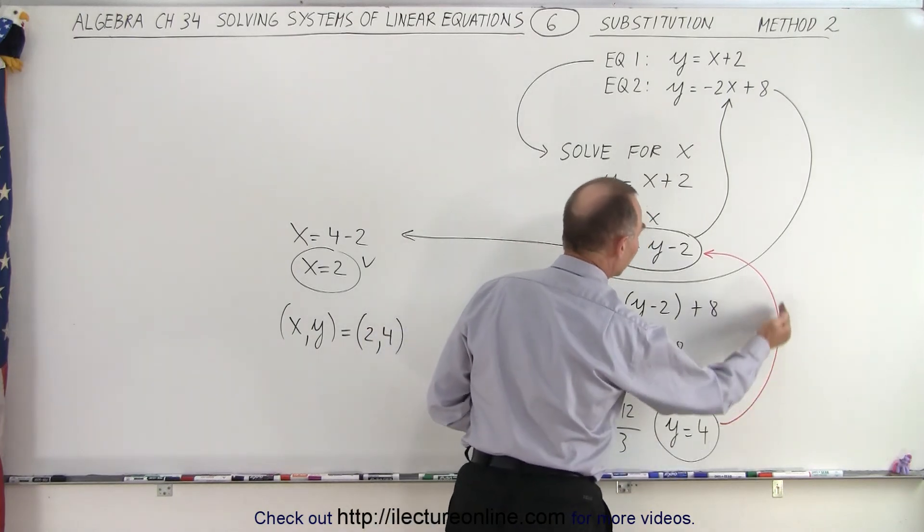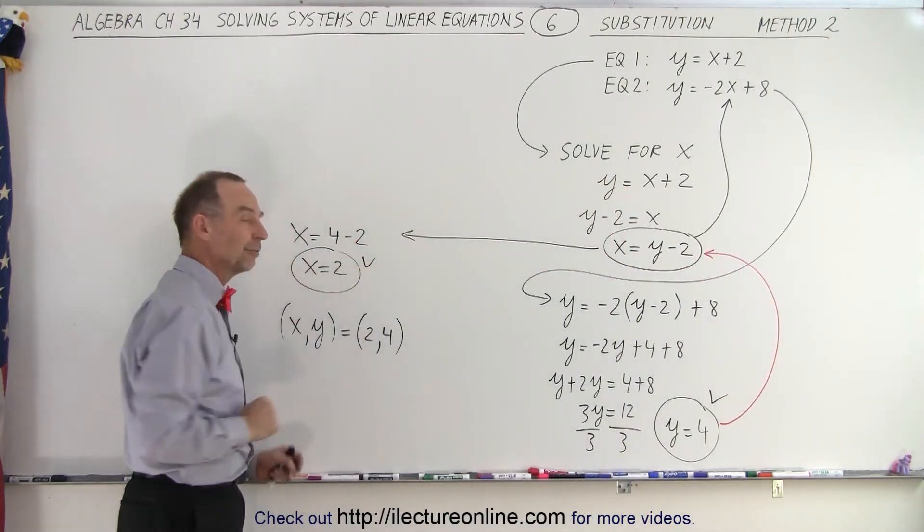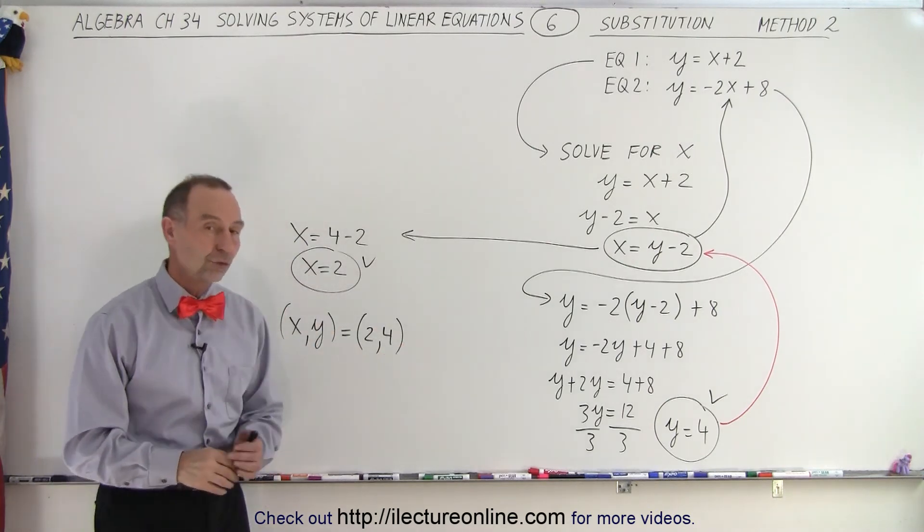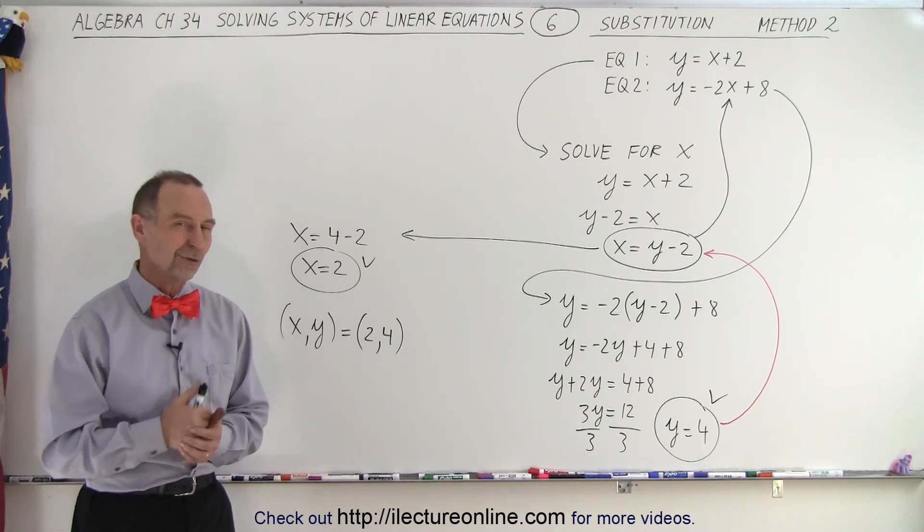Once we have that, we substitute that value for y back into this first equation to get the value for x. And then we have the x and y coordinates, and that is the solution of our problem. That is how it's done using the substitution method.